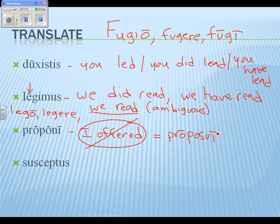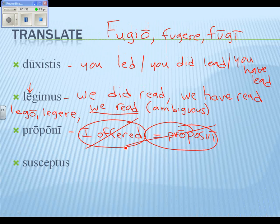It would be preposterous to say that 'proponi' is the same as 'proposui.' It isn't 'I was offered' because I want you guys to stay away from I-subjects. Jake — 'having been offered'? No, because that would be the fourth principal part, 'propositus.' Peter — 'to be offered.' There we go. What evil thing did I do? I gave you a passive infinitive: 'to be offered.'